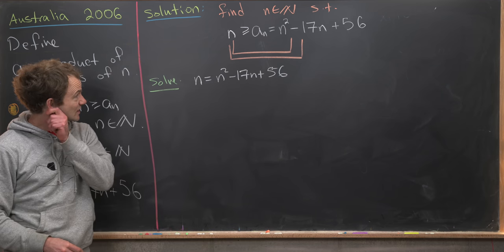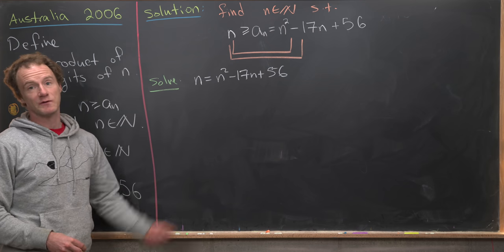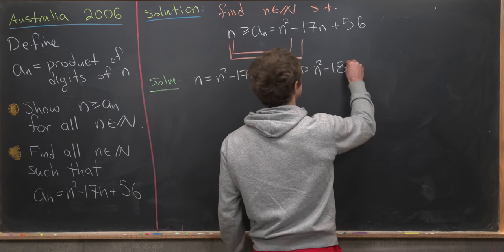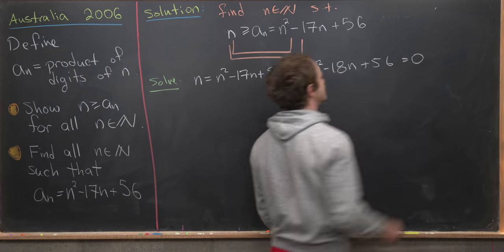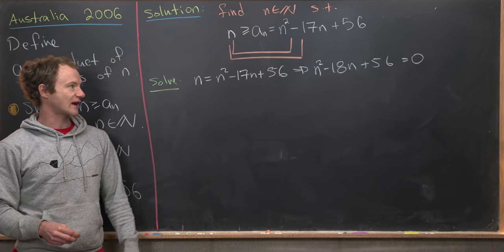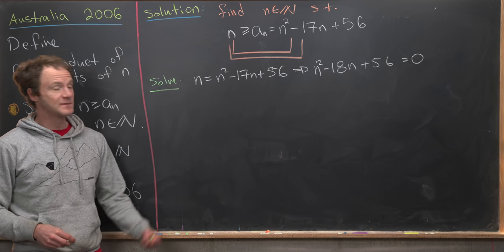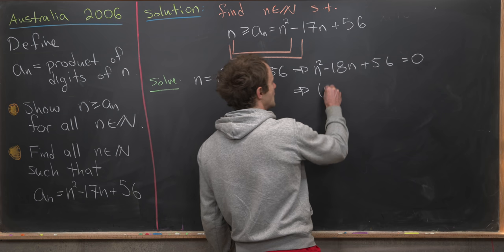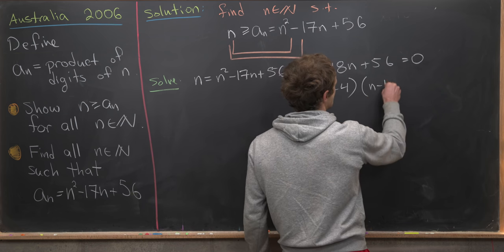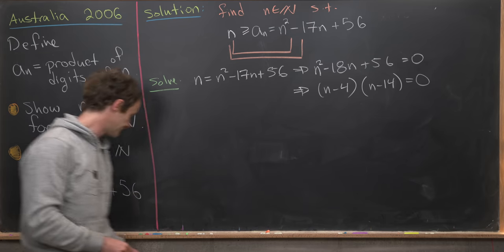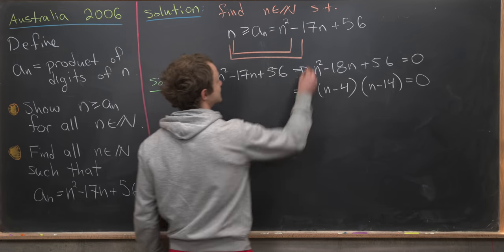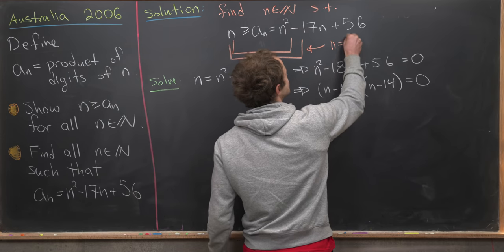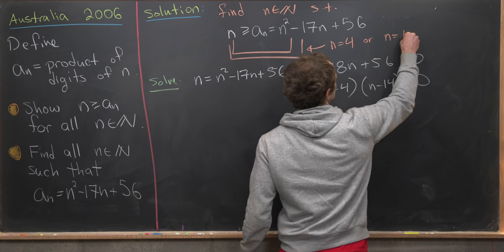This is actually pretty straightforward. We can just move everything over and then do some factoring. Notice that this is equivalent to saying that n² - 18n + 56 = 0. Next, you can check that 4 × 14 = 56, but then 4 + 14 = 18. So we're good to go on that factorization. We have (n - 4)(n - 14) = 0. So that tells us that this supplementary equation is satisfied when n = 4 or n = 14.